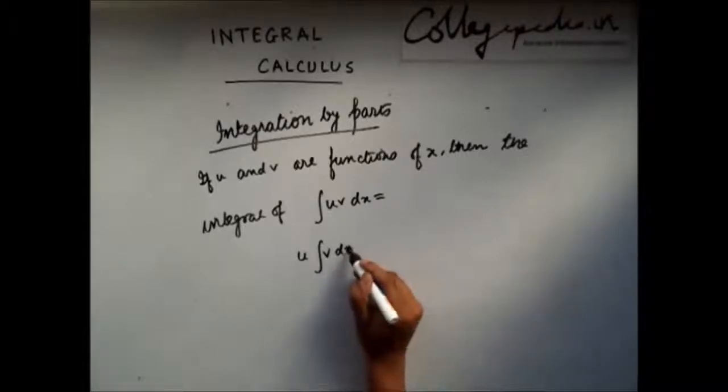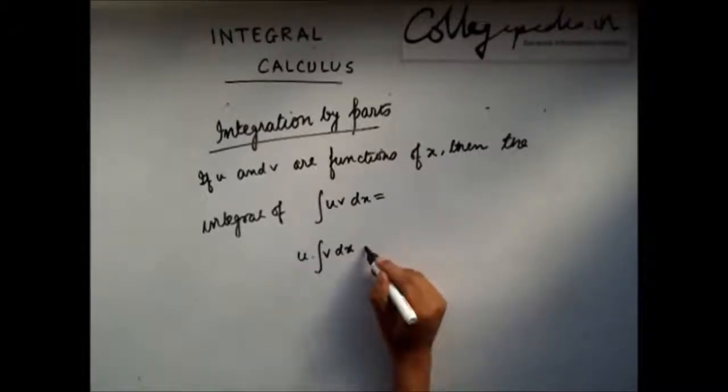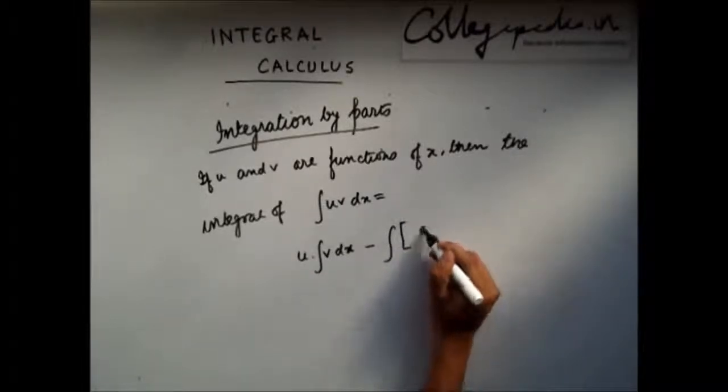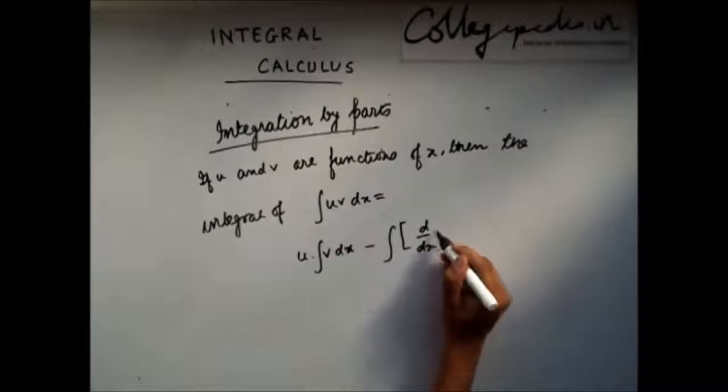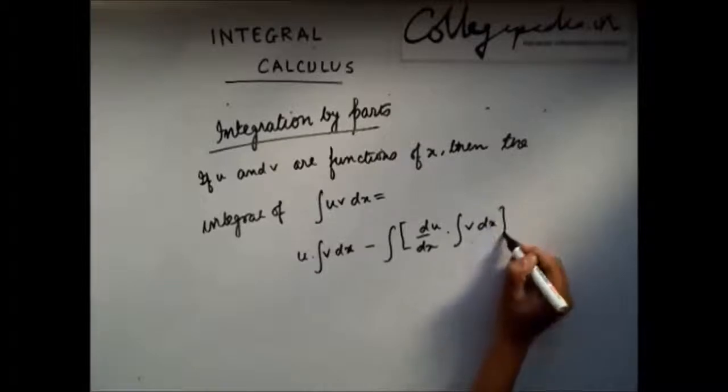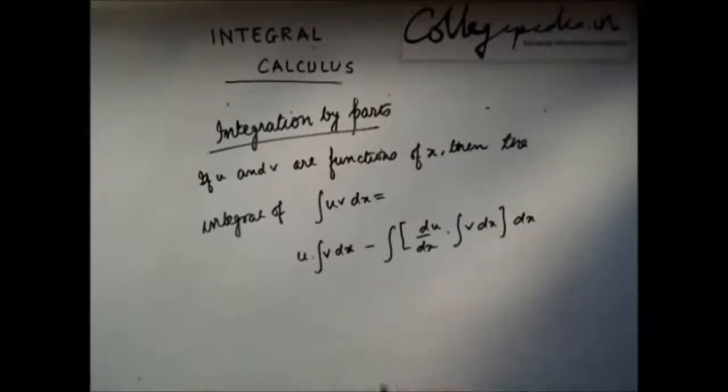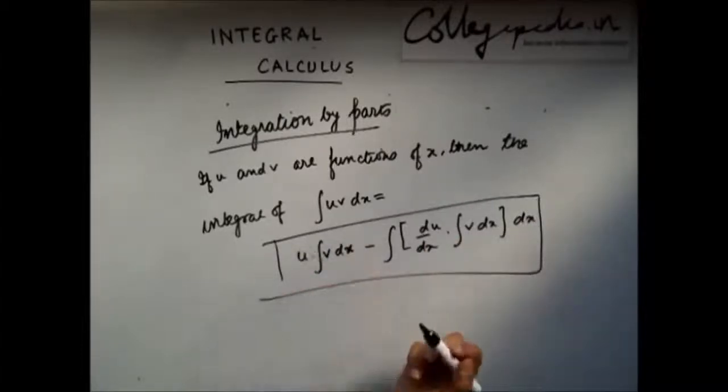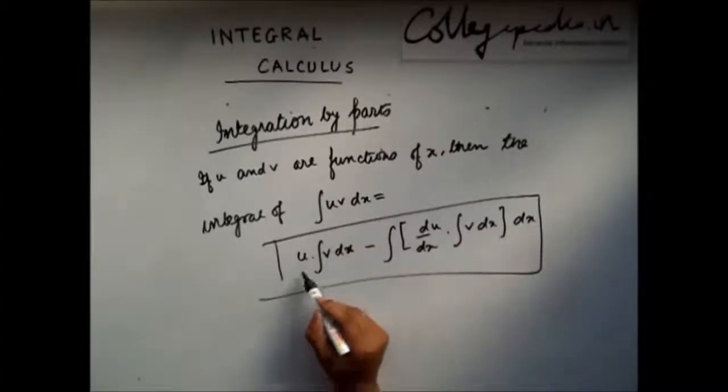U into integral of v dx minus integral of derivative of u multiplied by integral of v dx. So the product of two functions integration turns out to be this.